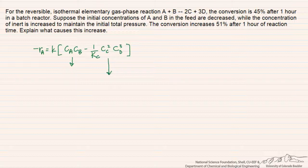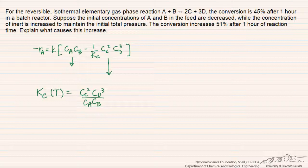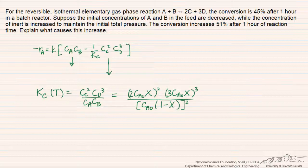One way to see this more clearly is to determine what the equilibrium conversion would be under these two sets of conditions. The equilibrium constant equals the concentration of the products raised to their stoichiometric coefficients over the product of the concentration of the reactants. We can express this in terms of conversion: the concentration of the products gives us 2·Ca0·x for every mole of C, and for every mole of A that we react, we also produce 3 moles of D.